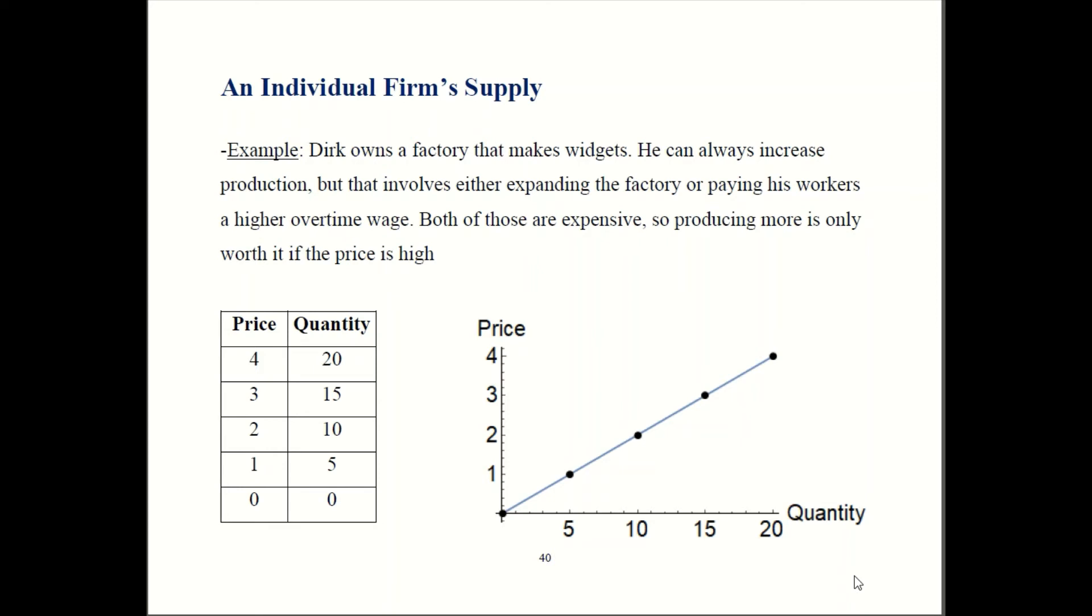To produce more widgets, he has to either get a bigger factory, which is going to cost him a lot of money upfront. Alternatively, he can pay his workers overtime, which will be extra expensive, in order to get them to produce more. So yeah, he can make more widgets if he wants to. It's always a possibility, but making more widgets keeps getting progressively more and more expensive.